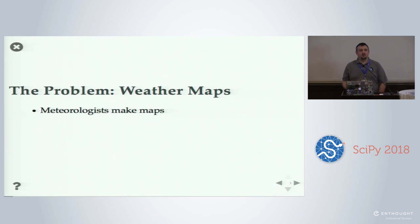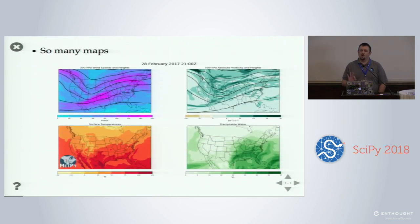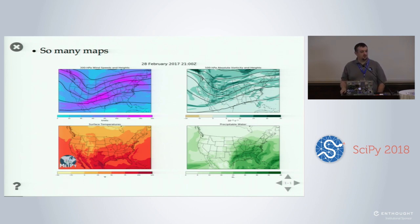The problem: meteorologists make lots of weather maps. So many weather maps. That's what we do all day, every day — looking at weather maps to see what's going on, see what happened. It's the bread and butter of meteorology, and tools to produce maps are important to our field. Here are some examples of things we're doing with MetPy today.